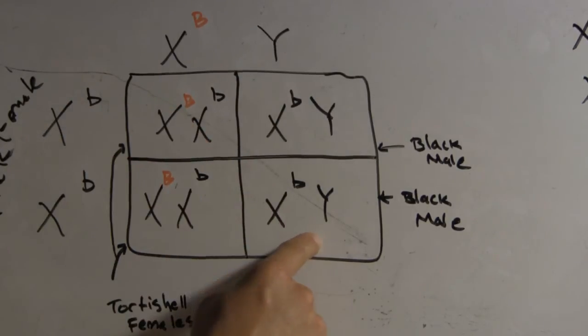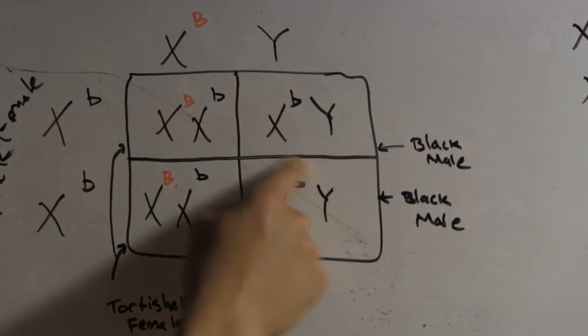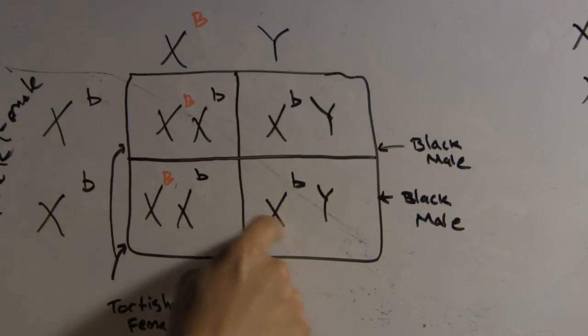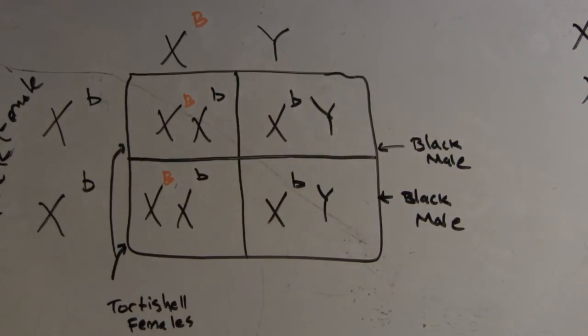In this case, you have a black male because it receives its lowercase b from this female and the Y from the male, but the Y has essentially nothing to do with the coat color, and so they become essentially what this is here. And this here is X lowercase b, which is black. X lowercase b, which is black.